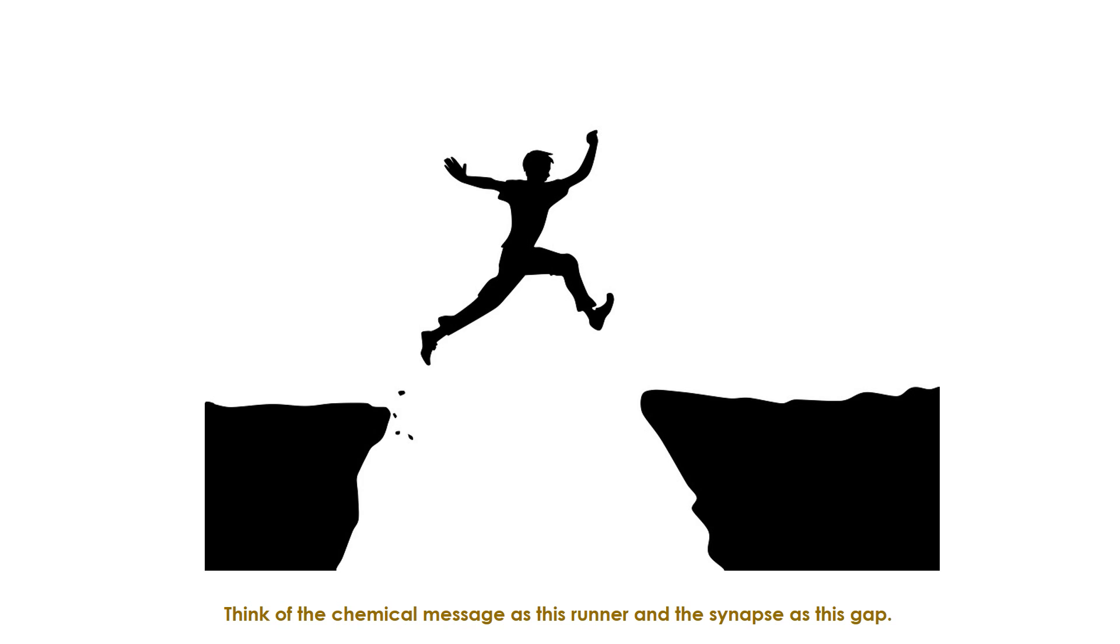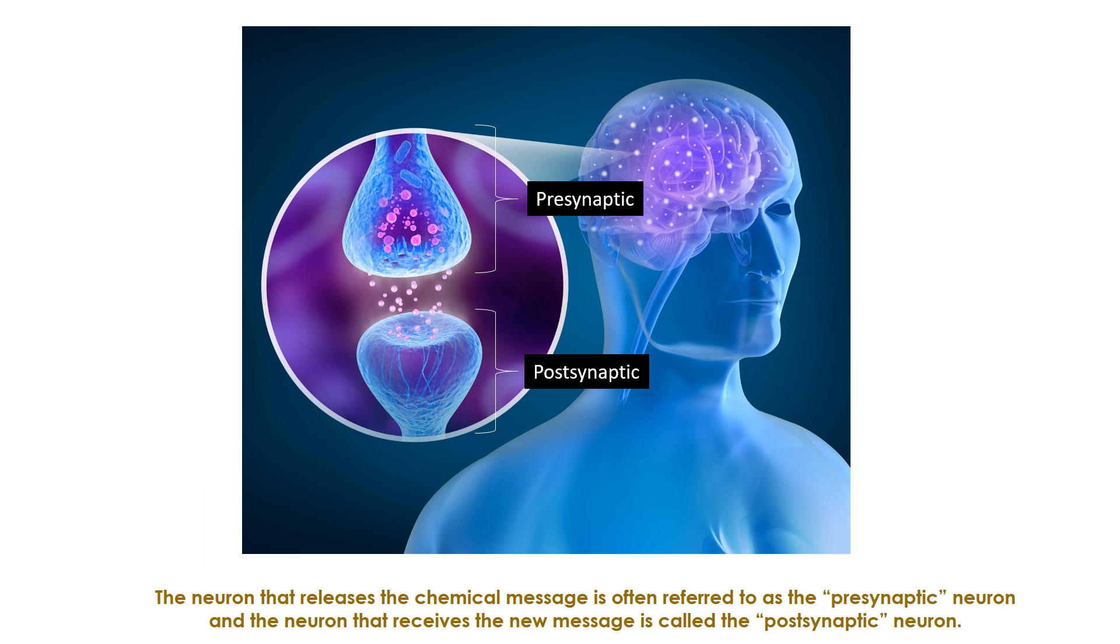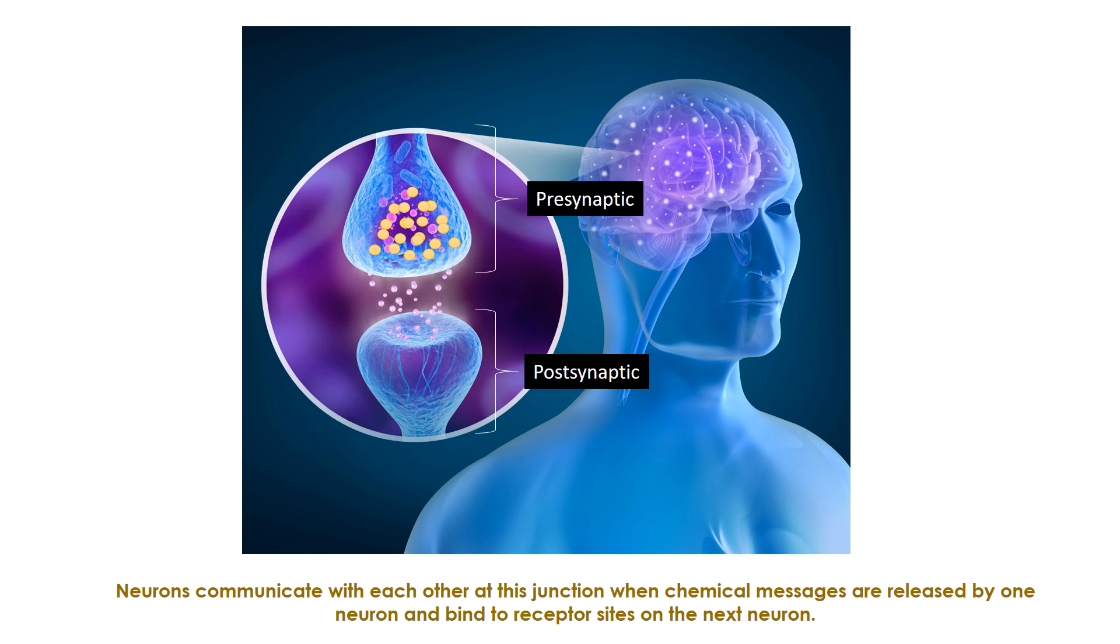Think of the chemical message as this runner and the synapse as this gap. The neuron that releases the chemical message is often referred to as the presynaptic neuron, and the neuron that receives the new message is called the postsynaptic neuron. Neurons communicate with each other at this junction when chemical messages are released by one neuron and bind to receptor sites on the next neuron.